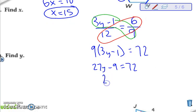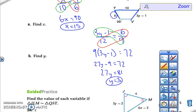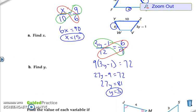Which tells us that 27y equals 81, which means that y equals 3. So again, we just use our similarity statement to set up our proportions, cross multiply, and then solve. That is all that we have for today. I will see you guys next time.